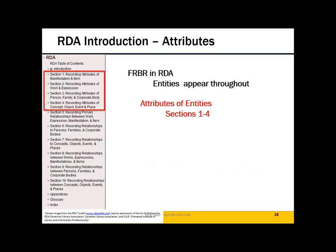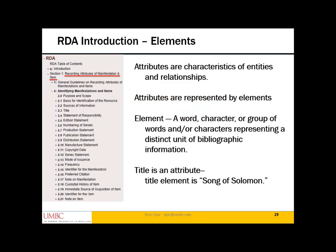Attributes of entities are covered in Sections One through Four. Much of the list consists of familiar characteristics, for example, title. Attributes are represented by elements in RDA. From the RDA glossary, an element is a word, character, or group of words representing a distinct unit of bibliographic information. So title is an attribute, and the words representing the title attribute make up the title element — 'Song of Solomon' is the text string representing the attribute of title.